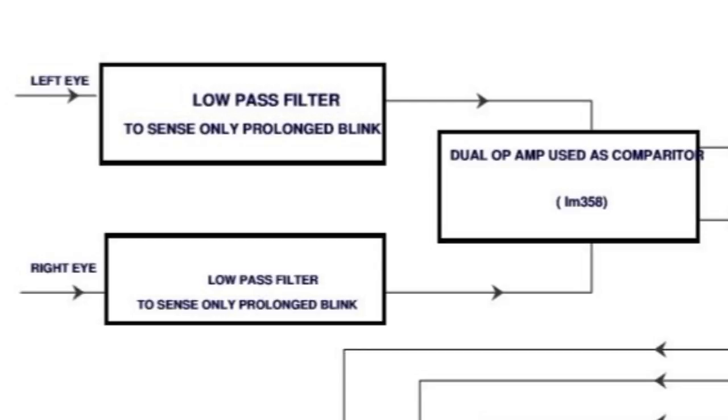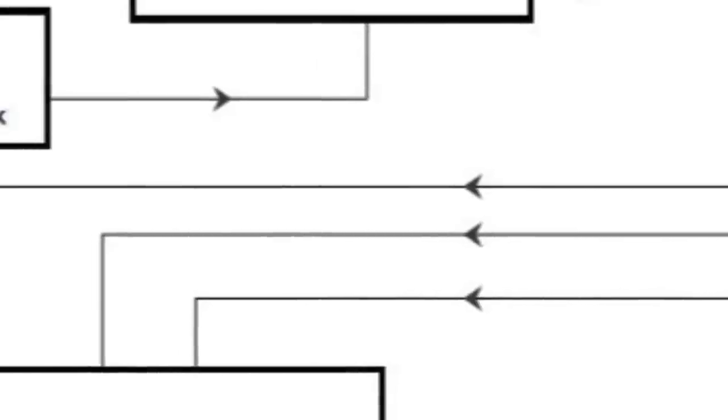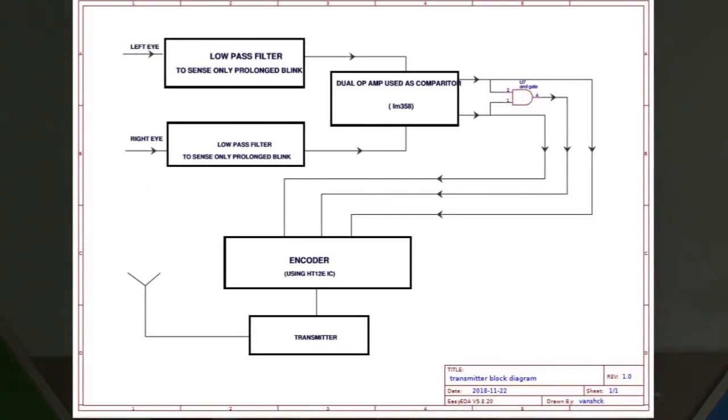The data from here goes to LM358 which is a dual op amp. These op amps are used as comparators which then go to the AND gate and then feed to the encoder. This data now is sent to the receiver through the transmitter.